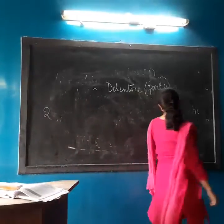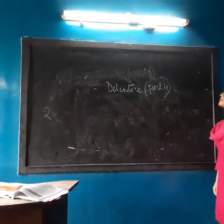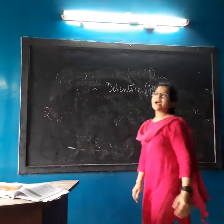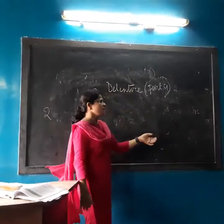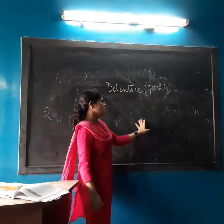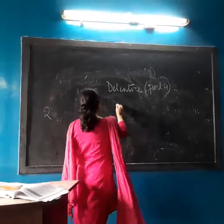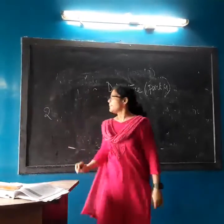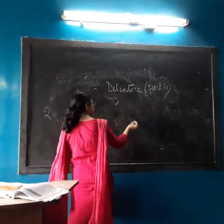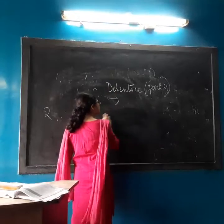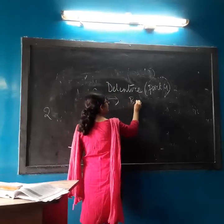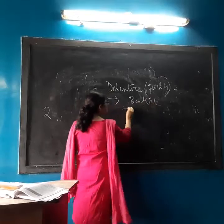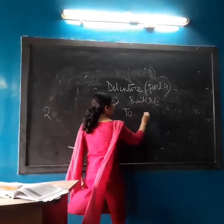Good afternoon students. Welcome to the fourth session on debentures. In the third session, I started that if the debenture is issued at a premium, then what will be the journal entry. The first entry will be: Bank Account debit to Debenture Application Account.